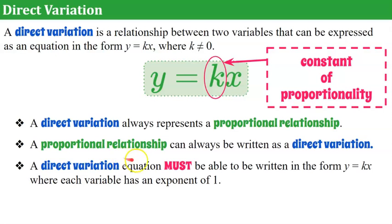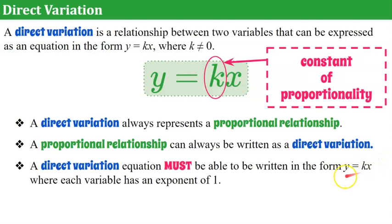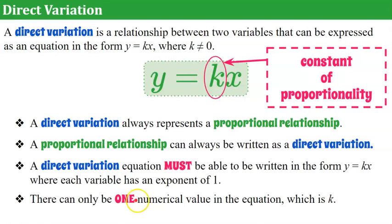A direct variation equation must be written in the form Y equals K times X, where each variable has an exponent of 1. Y has an invisible exponent of 1, and so does X. If the equation cannot be rearranged algebraically so that it reads Y equals a number times X, then it's not a direct variation. There can only be one numerical value in the equation, which is K — your constant of proportionality — and it must be multiplied by X.